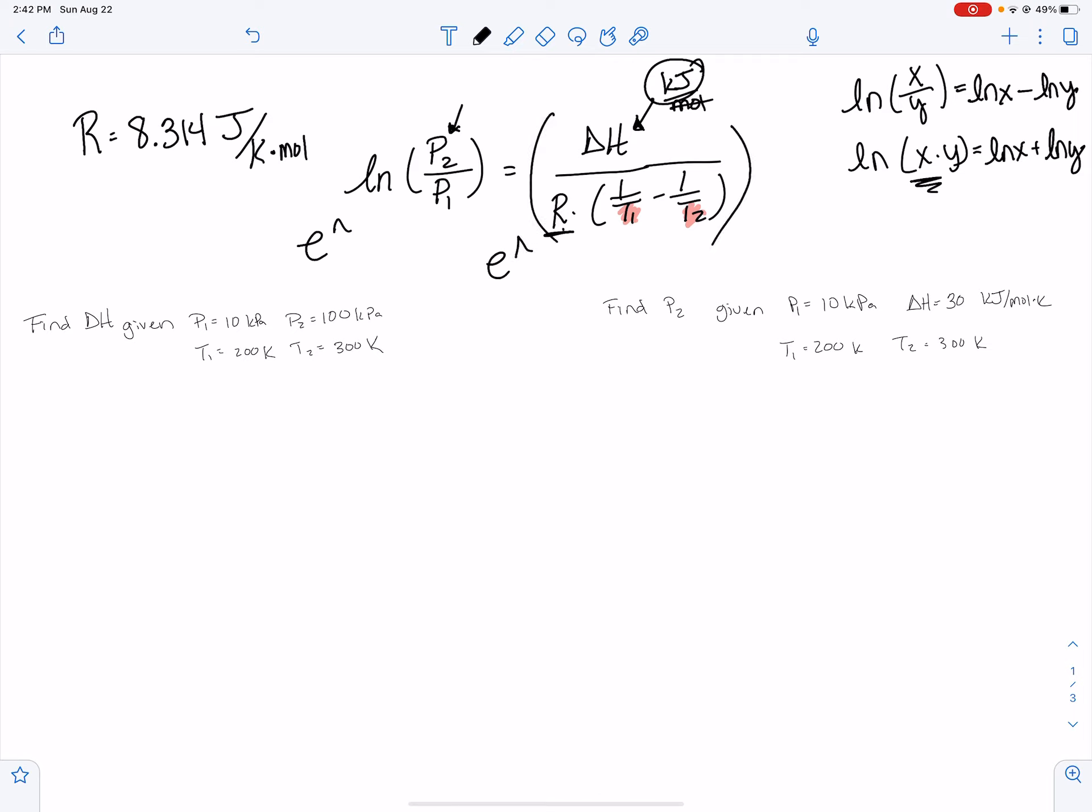And this whole thing would go into parentheses. When you do that, it makes both of those terms go away, and it just becomes P2 over P1. So use E raised to the, don't worry about these relationships right now.